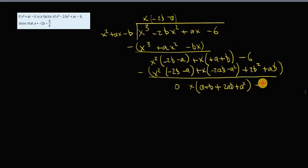And now the constant - I have -6. And then I've got minus 2b² - ab. Now this is equal to 0. And this is equal to 0 because it's a factor. It's divided evenly.